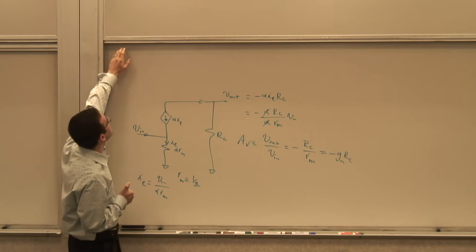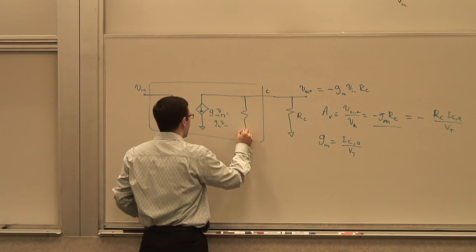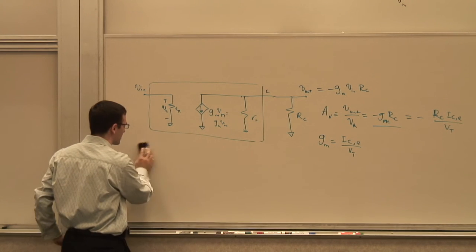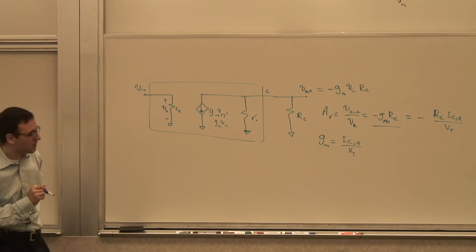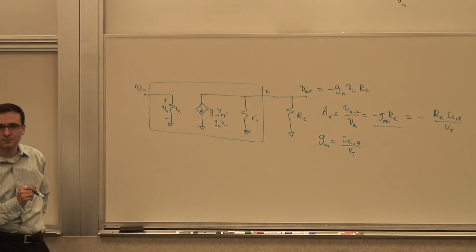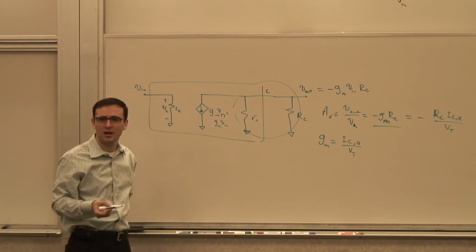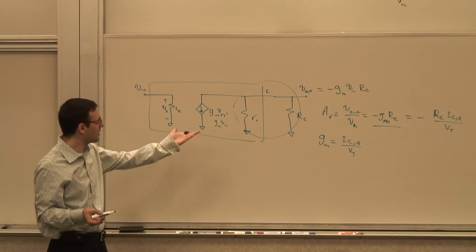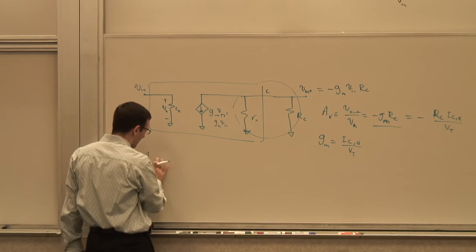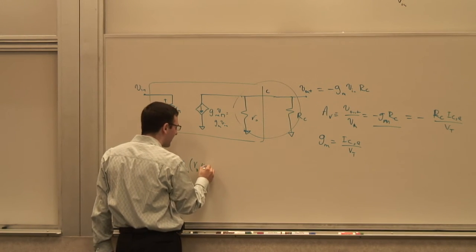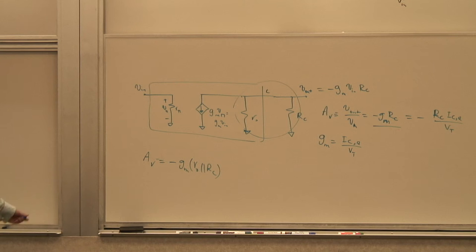We ignored RO. If we drop that assumption and include RO, it simply appears in parallel with RC at the output node. So the gain becomes AV = -Gm * (RC || RO). If RO is much greater than RC, this reduces back to -Gm*RC.